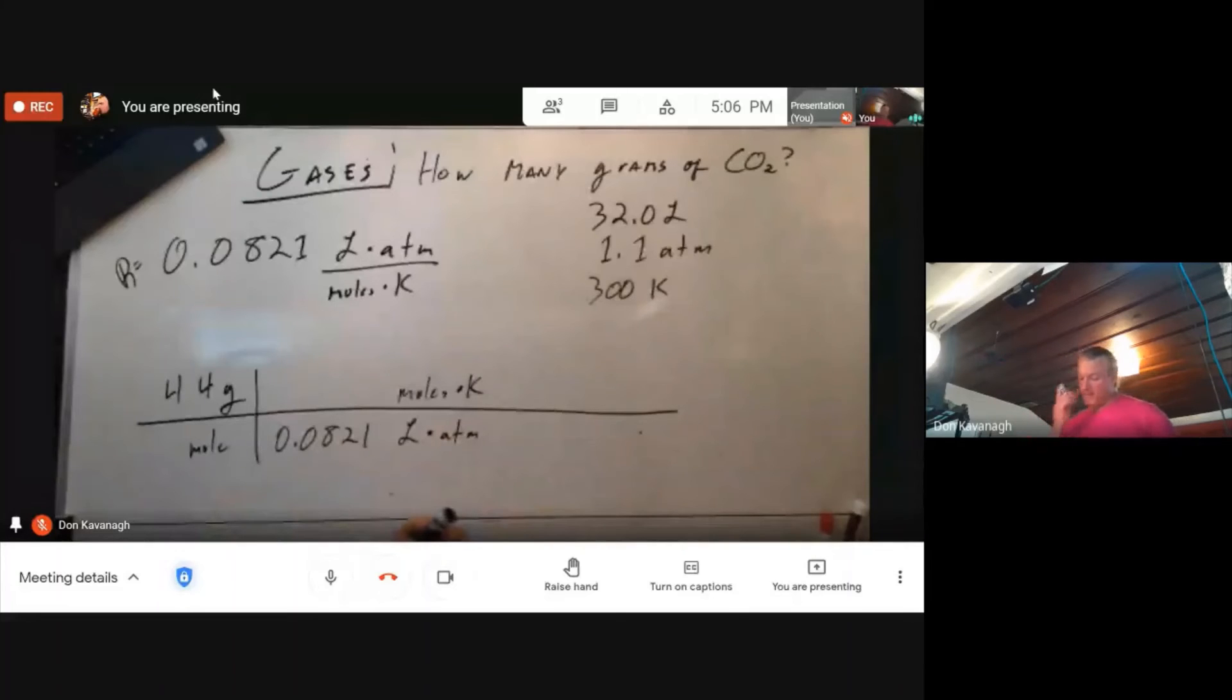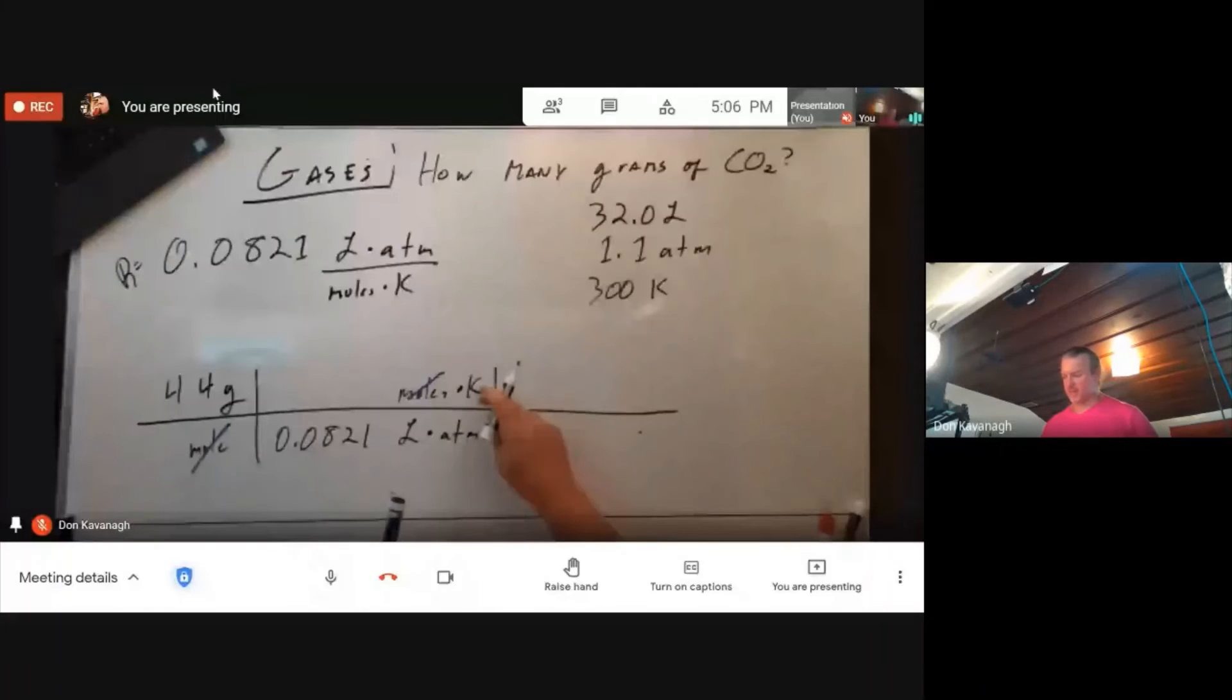Now I need to make the other stuff cancel out. So let's start with making Kelvin cancel out. 300 Kelvin. Good. I don't have to do any temperature conversions. It's just K to K.